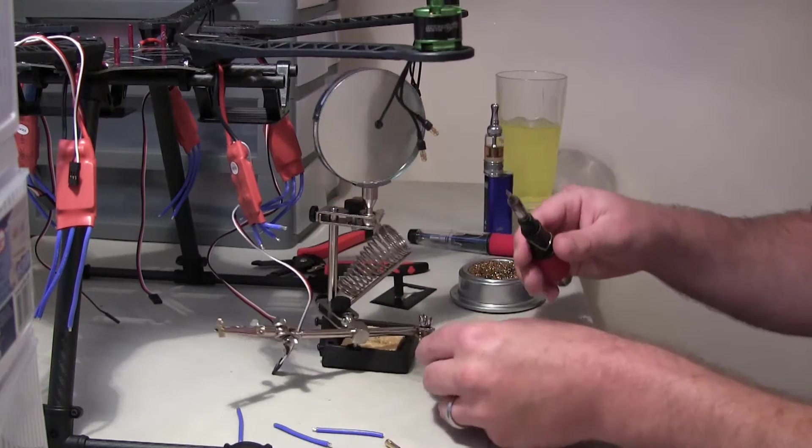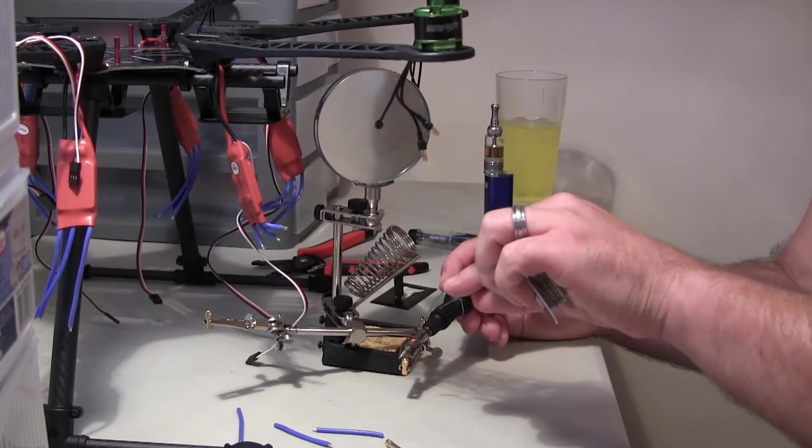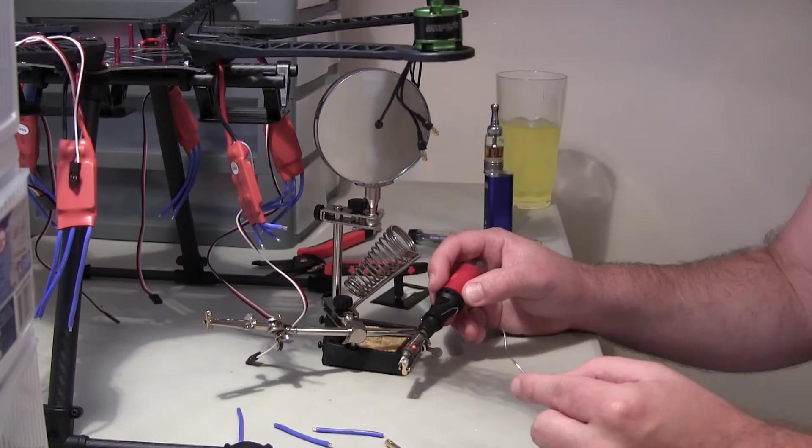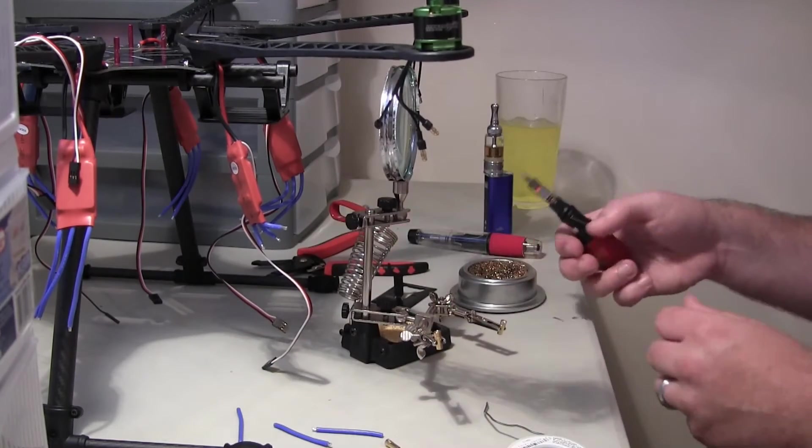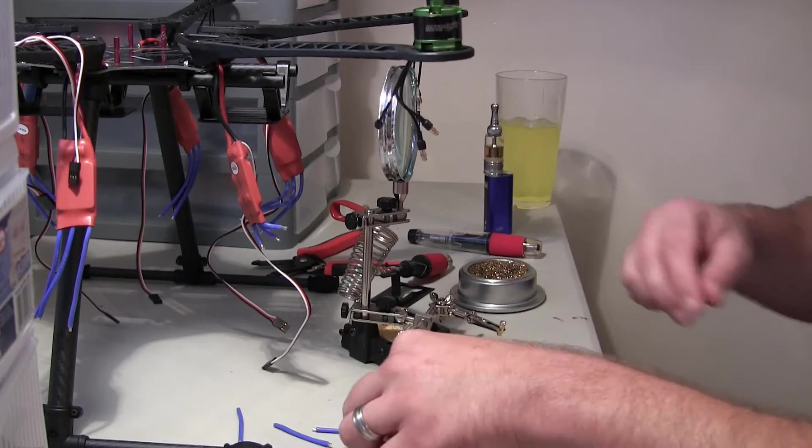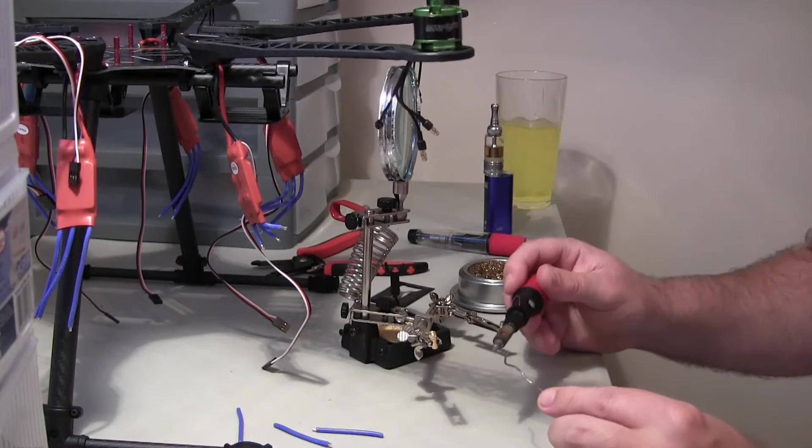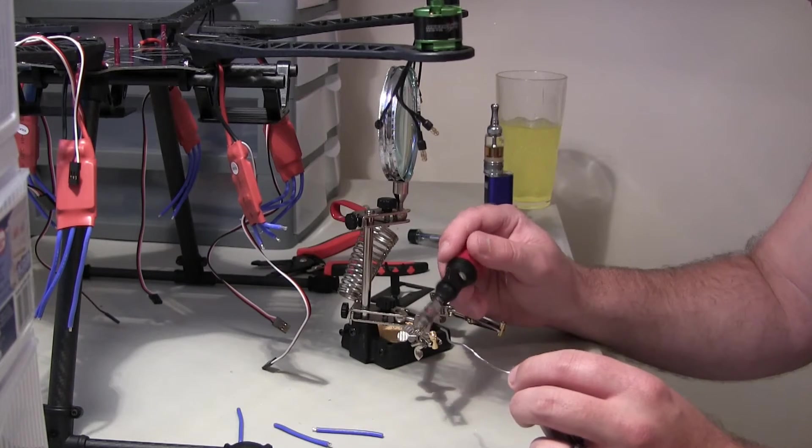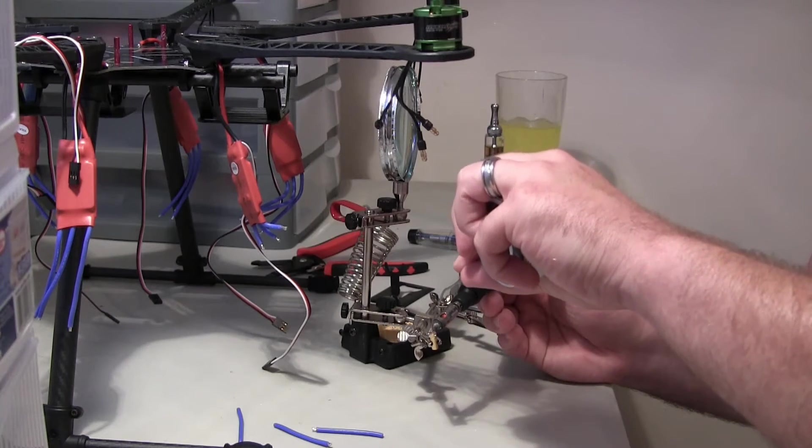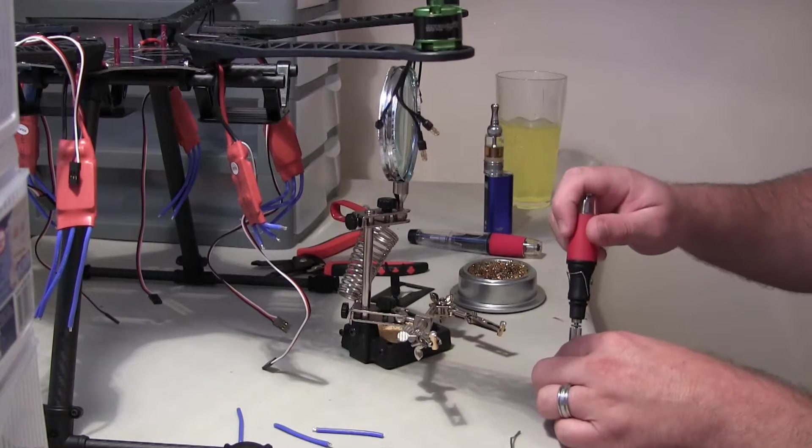So I'm going to go ahead and move on to the other clamp I've got here. We're just tinning the inside of that little part right there. Make sure you guys can see. Just applying the iron to the metal. Popping some solder in. All right, so that's two out of three. And last one. So we've got the three bullet connectors tinned.